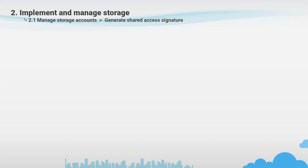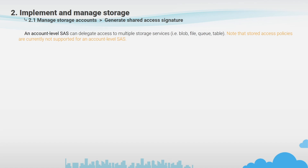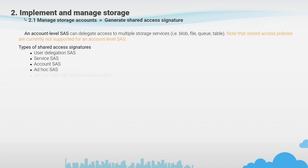A shared access signature (SAS) grants restricted access rights to Azure Storage resources. This type of access is more suited to external use — outside of the cloud — and gives you granular control over how a client can access your data, what resources they can access, what permissions they have, and you can set start and expiry dates for each generated token. Azure Storage accounts support three types of SAS: user delegation SAS, secured with Azure Active Directory credentials plus specified permissions, which applies to blob storage only.